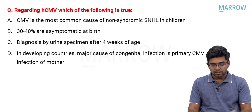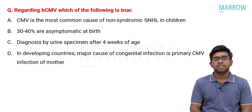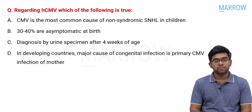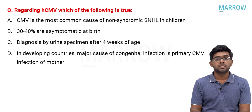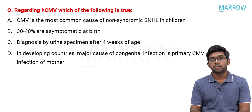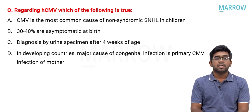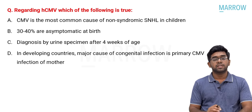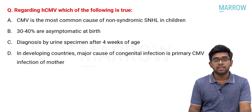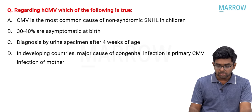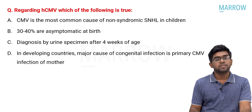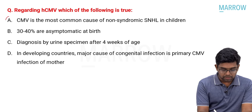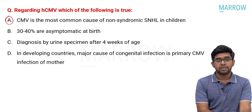Moving on to a question regarding HCMV — human CMV. Which of the following is a true statement? This is a repeated topic about congenital CMV infection. The true statement is: CMV is the most common cause of non-syndromic sensorineural hearing loss in children. Generally, sensorineural hearing loss has a syndromic or genetic association, but among non-syndromic causes, torch infection — specifically CMV — is the most common cause.